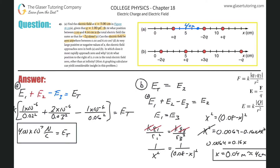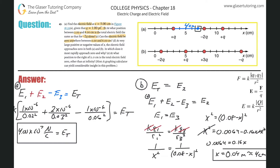Letter C: can the electric field be zero anywhere between zero and eight centimeters? We already found the point where fields are equal — that's not zero. Testing the extremes and thinking about vectors: at any point in that range, two vectors point right and one points left, and the magnitudes and distance-squaring means they can never perfectly cancel.